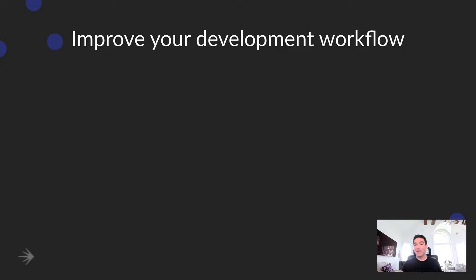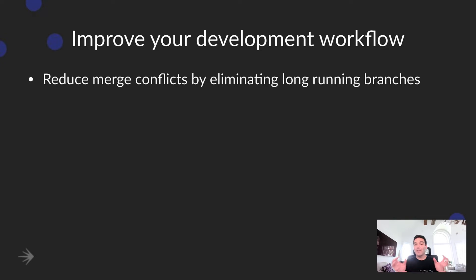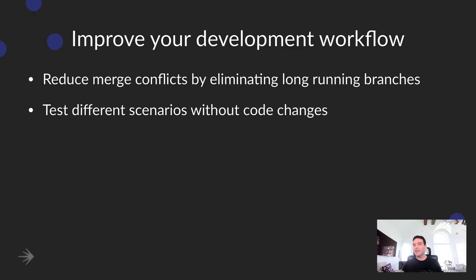Some of the ways that you can use flags to improve your development workflow: you can reduce merge conflicts by eliminating long-running branches. I can be working on a feature and actually merge my code back into main on a regular basis without necessarily being concerned that that code is going to run and cause problems for everybody else. It can be behind a flag, so within the main branch it's not running in production, maybe not even running on test, only running locally for me. I can also test different scenarios without making code changes — I can pass values from a flag and see how this is going to work.